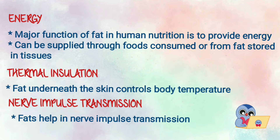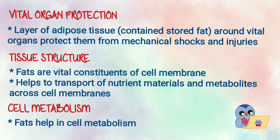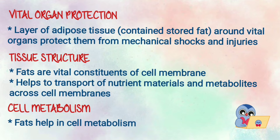Second function is thermal insulation. The fat present beneath our skin helps to maintain and control our body temperature, which is very essential for our life. Third, nerve impulse transmission — fat plays an important role in the transmission of nerve impulses. Fourth function is vital organ protection. Fat is stored in the adipose tissue, and the adipose tissues around our vital organs protect them from mechanical damages, injuries, or shocks.